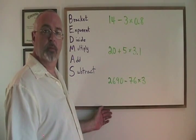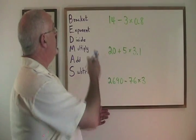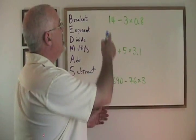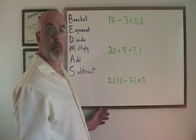Here are some calculations where it would be very easy to make a mistake if we do not follow the rule of BEDMAS. Here we have 14 minus 3 times 0.8.